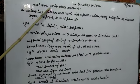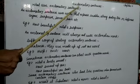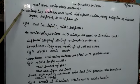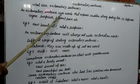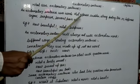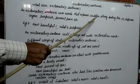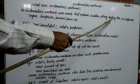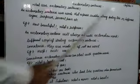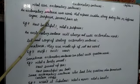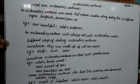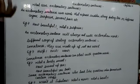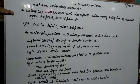What are exclamatory sentences? An exclamatory sentence uses words that express sudden, strong feeling like joy, happiness, anger, surprise, sorrow, pain, etc. So exclamatory sentence means that you have a strong feeling.